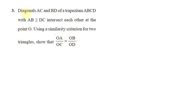Here you can see diagonals AC and BD of a trapezium ABCD. So ABCD is a trapezium with AC and BD as its diagonals, and AB is parallel to DC.